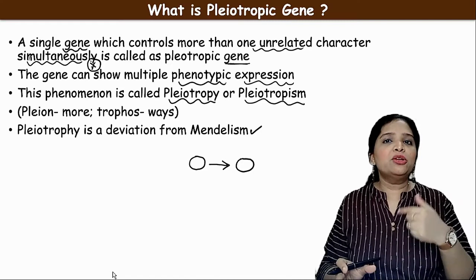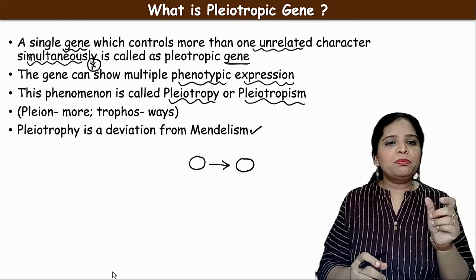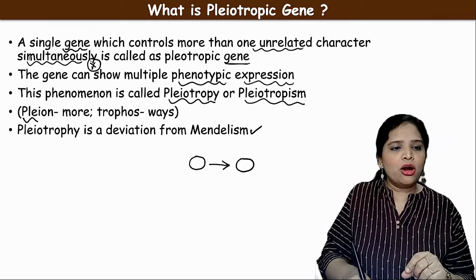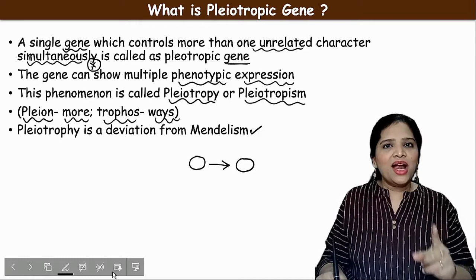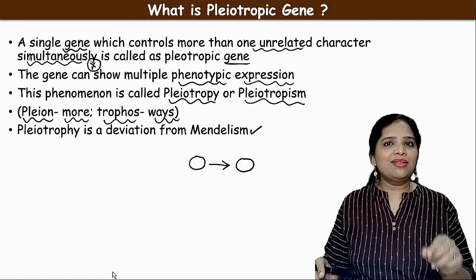The word 'pleiotropic' was originally derived from a Greek word: 'pleion' means more, and 'trophos' means ways. So one gene is able to control different characters in different ways — that is why we call such a gene a pleiotropic gene.